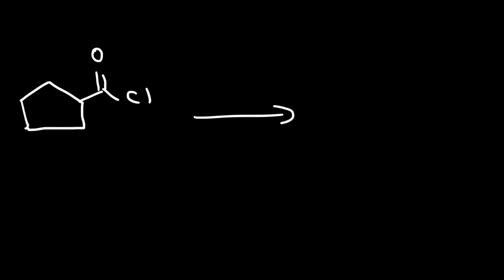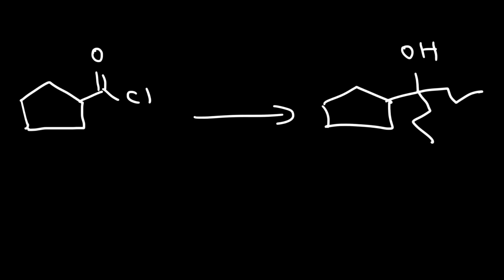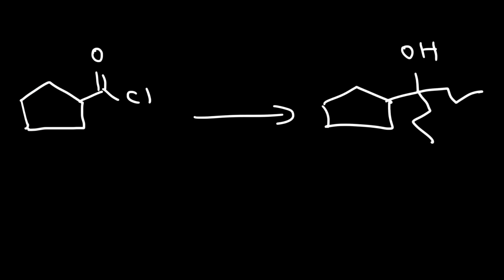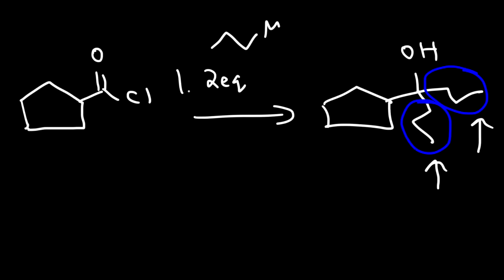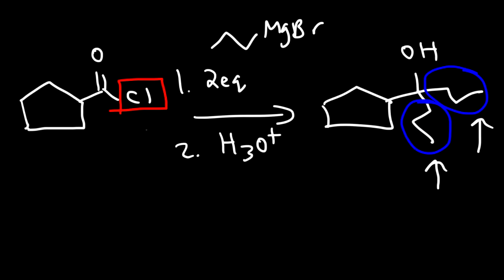Here we have an acid chloride that we wish to convert to a tertiary alcohol. We already have six carbons; what we need to add are two propyl groups. Recall that when mixing a Grignard reagent with an acid chloride or ester, two R groups are added, and those two R groups are the same. So in step one, we need two equivalents of propyl magnesium bromide, and in step two, just H₃O⁺. The mechanism is virtually the same as with an ester — the only difference is Cl is the leaving group instead of OCH₃.